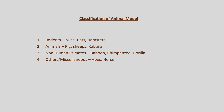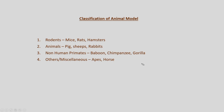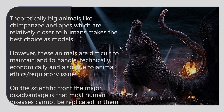We can classify animal models into four main groups: rodents, larger animals, non-human primates, and miscellaneous. Under rodents, mice, rats and hamsters are included. In larger animal models we use pig, sheep and rabbits. Non-human primates include baboon, chimpanzee and gorilla. Miscellaneous models include horses and zebrafish, and this list is not limited. This is just to give an idea about the classification of animal models used for drug discovery or understanding molecular mechanisms.